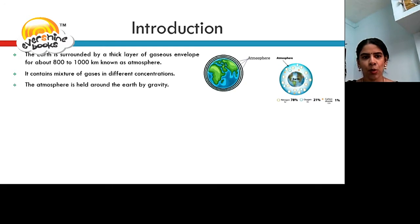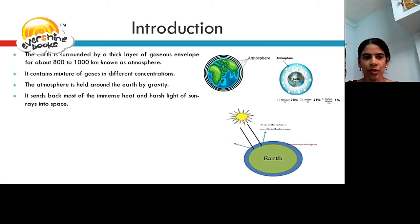The atmosphere is held around the earth by its gravity. It sends back most of the immense heat and harsh light of sun rays into space. It does not allow the heat of the earth to escape easily during the night.